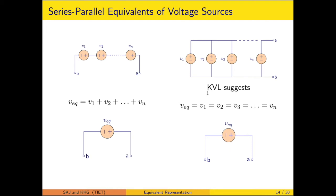When ideal voltage sources are connected in parallel, the overriding constraint from KVL is that the voltages must be equal in both magnitude and polarity. The equivalent voltage is thus equal to the individual source value. Although the voltage level is the same, the current supplied by each source can differ — they share the load current.